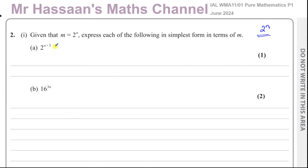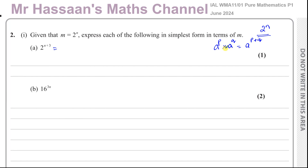So here we can use the law of indices in reverse. A number to the power of p times the same number to the power of q will give you that same number to the power of the sum of those two. From the laws of indices, you have two numbers with the same base being multiplied together — you add their powers.